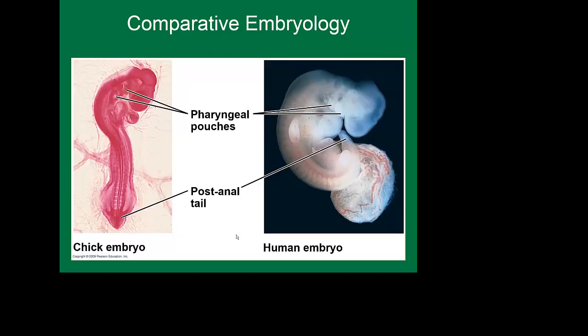We can also look at something known as comparative embryology — comparing the embryos of different organisms, here comparing a chicken and a human. A couple of characteristics to point out are a post-anal tail: you had a tail as an embryo. We also had something known as pharyngeal pouches. In some organisms, these pharyngeal pouches would become associated with gills and breathing apparati in aquatic animals, but in humans and chickens — where we're not underwater — they actually become associated with ear structures.